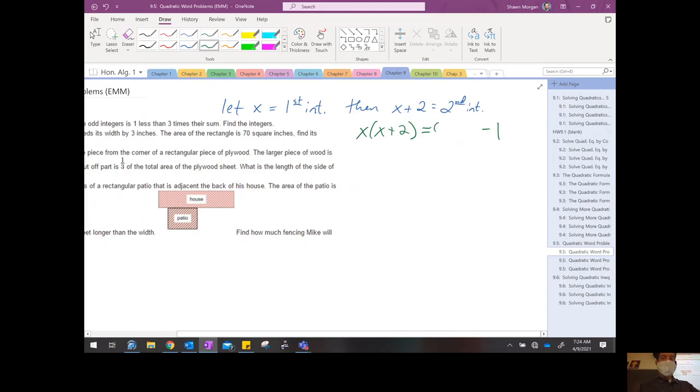So one less than something means something minus one, and it says three times their sum. And the sum, of course, means what? Add. So we got x plus x plus 2. So that's step three. That's our equation. That's the hardest step. Translating from English into math here, we've written out that third step. We've written out our equation.